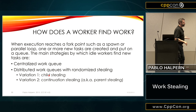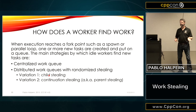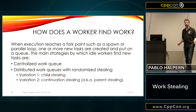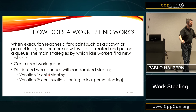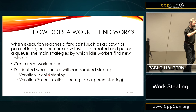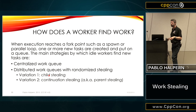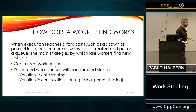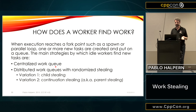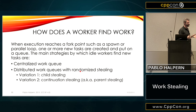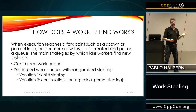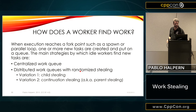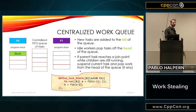How does a worker find work? The two approaches are a centralized work queue or distributed work queues. For distributed queues, there are two major subcategories: child stealing and continuation stealing (also called parent stealing). Let's first understand the centralized work queue. When a new task is added, it goes to the tail of a FIFO queue. When a worker is idle, it takes the next task off the queue. At a join point, if the needed tasks aren't done, the worker suspends and takes tasks off the queue until the join is satisfied.